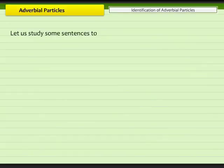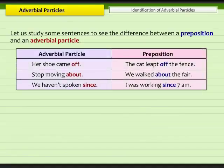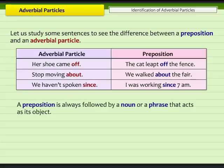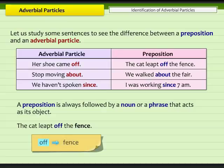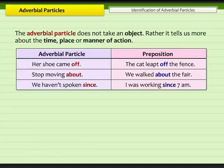Let us study some sentences to see the difference between a preposition and an adverbial particle. The preposition is always followed by a noun or a phrase that acts as its object. For example, 'the cat leapt off the fence.' The preposition 'off' is followed by the noun 'fence,' which acts as its object. The adverbial particle, however, does not take an object. Rather, it tells us more about the time, place, or manner of action. For example, 'her shoe came off.' The word 'off' in this sentence does not take any object. It modifies the verb 'came' and thus acts as an adverb. So, 'off' is an adverbial particle.